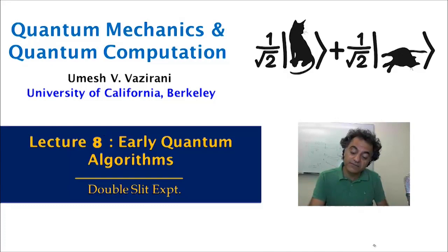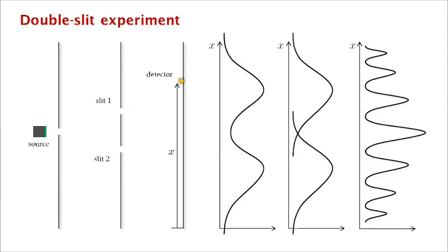Okay, so now let's try to understand Simon's algorithm in a very different way, in a much more physical way, in terms of something we talked about in the very first lecture, which was the double slit experiment.